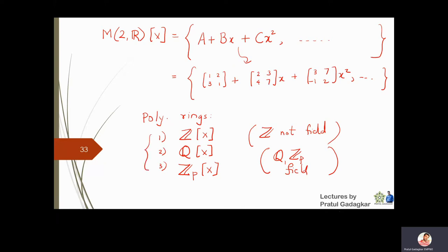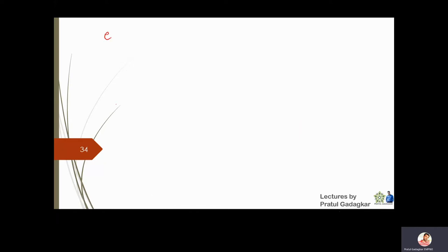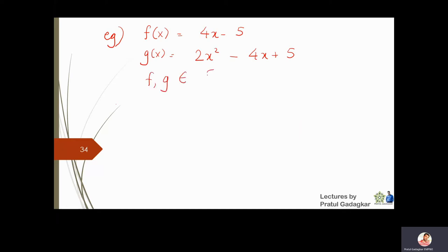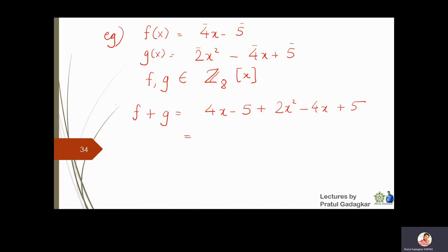Let's take a simple problem. Take f(x) = 4x - 5 and g(x) = 2x^2 - 4x + 5 as polynomials in Z8[x]. When we compute f + g = (4x - 5) + (2x^2 - 4x + 5), the 4x and -4x cancel, and -5 and +5 cancel, leaving just 2x^2.